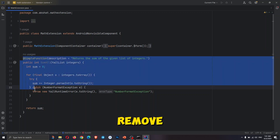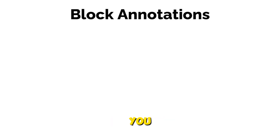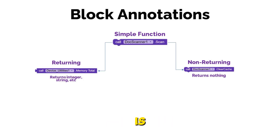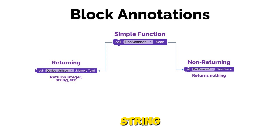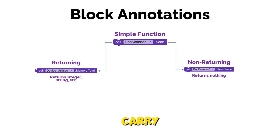Firstly, we will remove this default code. Now before continuing, let me tell you the annotation for the blocks. The purple block is called the simple function block. Inside it, there are two categories — let's name them returning and non-returning for you to easily understand. The returning block can return an integer, string, etc., whereas the non-returning block will not return anything and is used to carry out a function without the need to return anything.